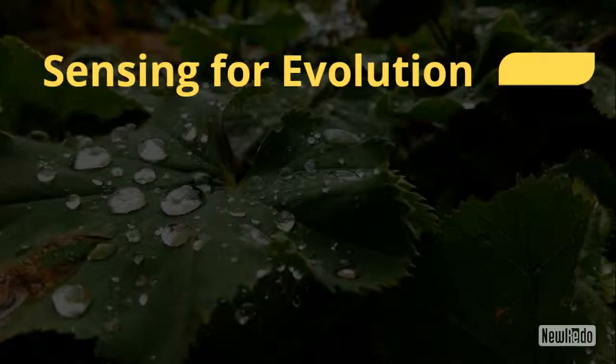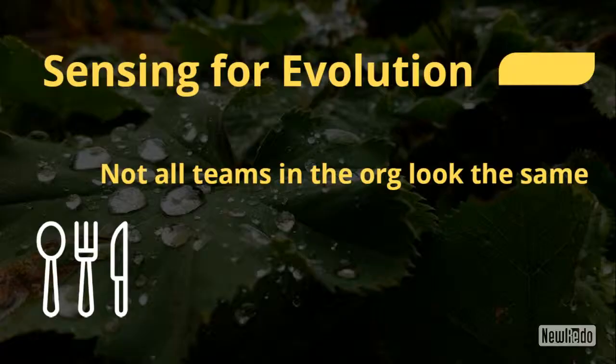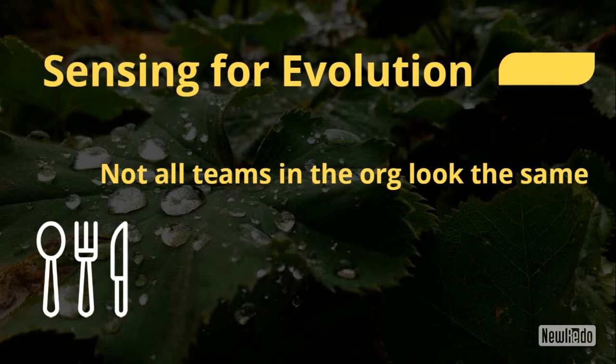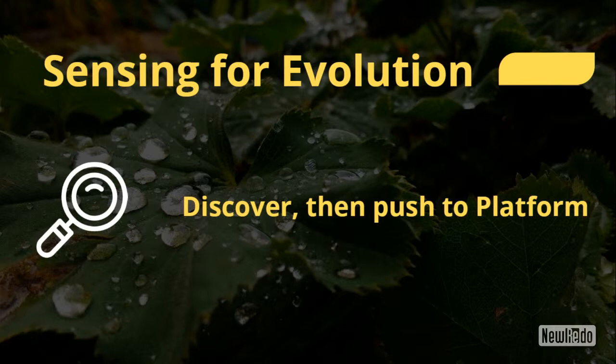Using these three interaction modes as a way to sense whether things are working well becomes a very powerful mechanism for helping us evolve our organisation — and therefore also what software we build. We collaborate between two different teams, discover what we need to build, but then crucially push it down into a platform. Once we've discovered that this is something other teams will need to use, platformise it so other teams can consume it.